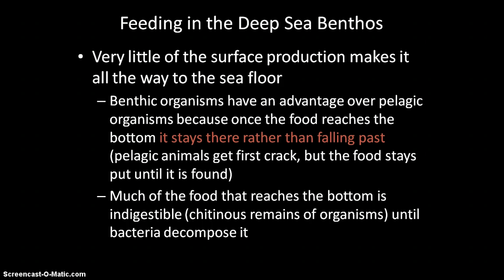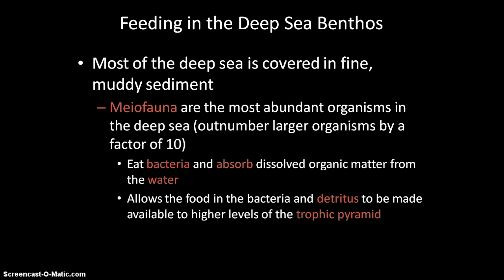Most of the food that actually makes it to the bottom is indigestible — like copepod shells and exoskeletons — which are inedible until bacteria decompose them. So bacteria are a huge part of the food chain in deep sea benthic regions. Most of the deep sea floor is covered in fine, muddy sediment, and meiofauna are the most abundant organisms there. Meiofauna are animals that live between grains of sand; they eat bacteria that are breaking down detritus and absorb organic matter from the water. They pass energy up to higher levels of the food chain.